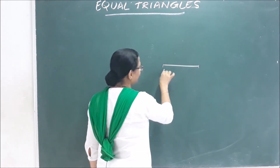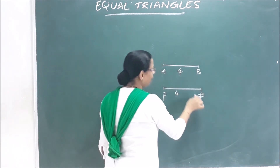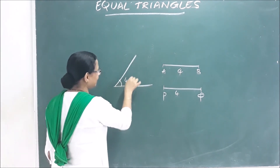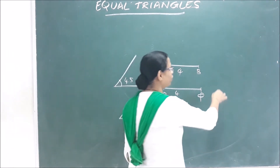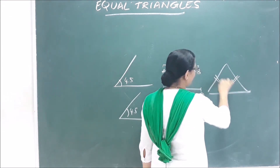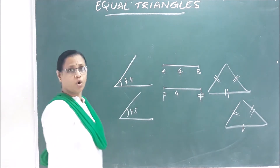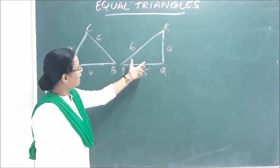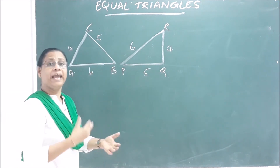Line segment AB is 4 cm, and this line segment is also 4 cm — these two are equal. This angle is 45 degrees, so these two angles are the same. If three sides of these two triangles are equal, they are congruent. Each pair of corresponding angles and sides should match.